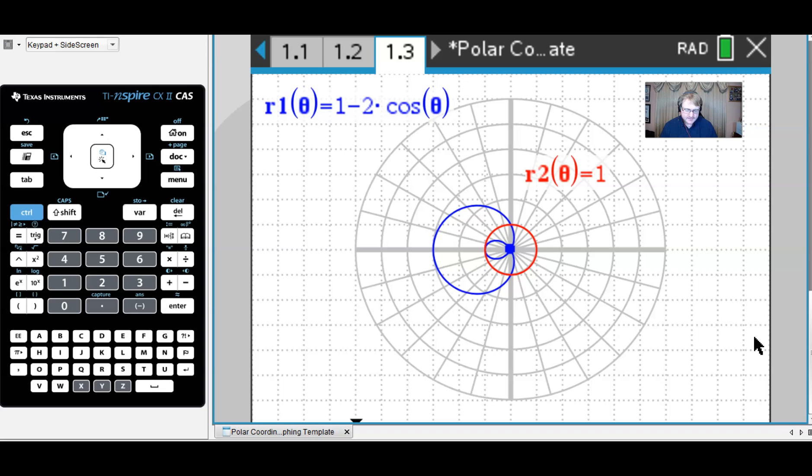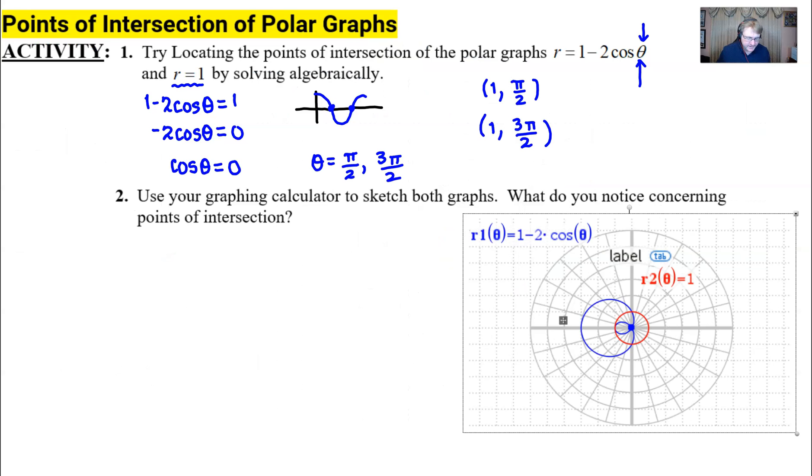What do we notice? We notice there are three points of intersection, not the two that we originally thought. So what's going on? Let me capture this image and put it back into our notes page. We find ourselves back in the document with our curve sketch. I'd like to notice that the two points I'm indicating with these ordered pairs seem very clear - the theta values could be π/2 and 3π/2, and of course the radius is 1.